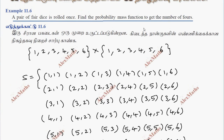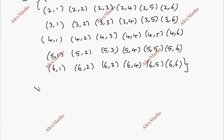We have a random variable — that is the number of 4s. The random variable X represents the number of 4s, which can take value 0, 1, or 2.